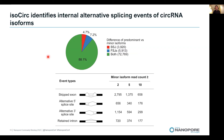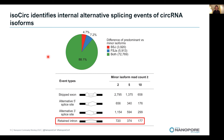We can also use the ISOCIRC data to study alternative splicing events within circular RNAs. Focusing on alternative splicing events in the internal linear part of circular RNA isoforms, we identified over 5,000 alternative splicing events corresponding to all major types of alternative splicing patterns. In particular, compared to previous short-read-based reconstruction studies, we identified a disproportionately high number of retained intron events from the ISOCIRC data.